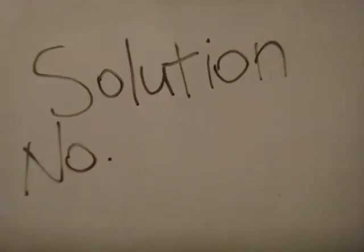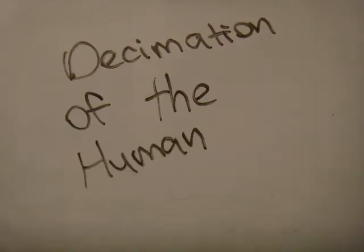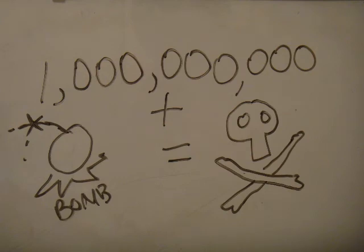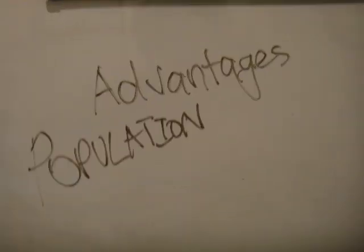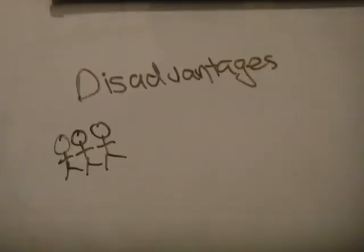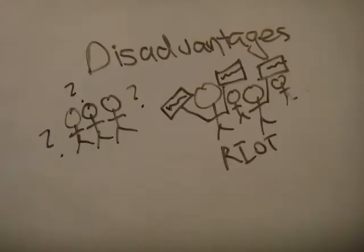And finally, solution number 3 — the most obvious and straightforward solution: Decimation of the human population. This is the aggressive one out of the three solutions. The solution is to select a few billion people and kill them. While as violent as it sounds, desperate times call for desperate measures. Advantages: Instant curbing of the population. Disadvantages: Indecision on selection of who to kill, and causing fear and commotion in the public.